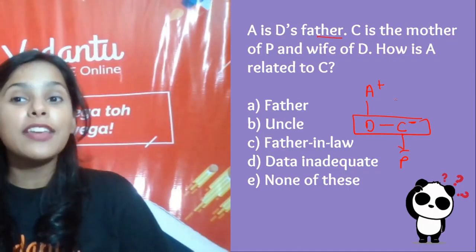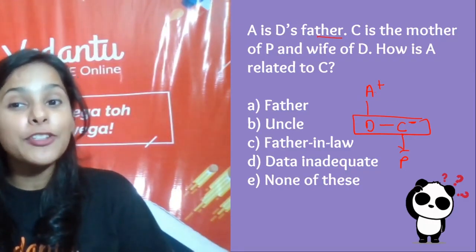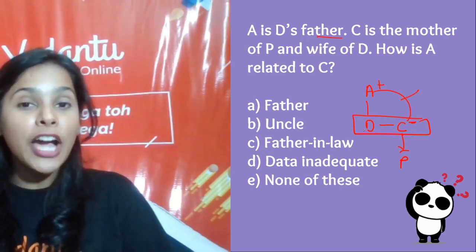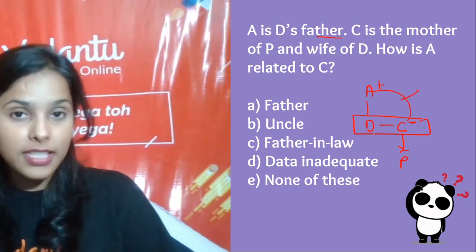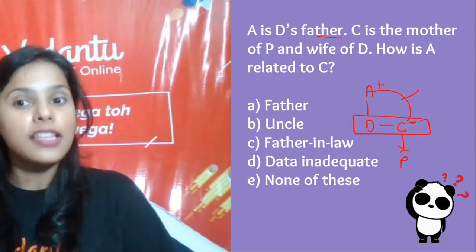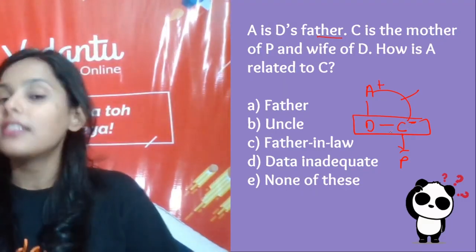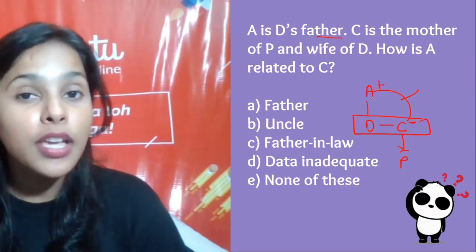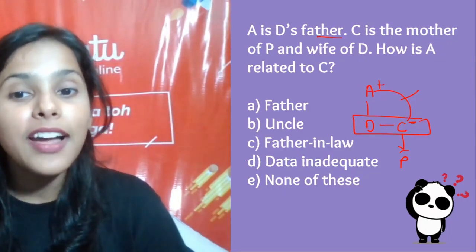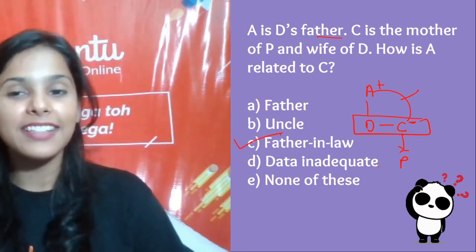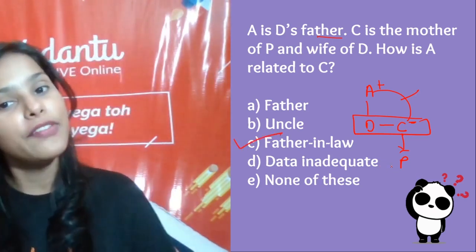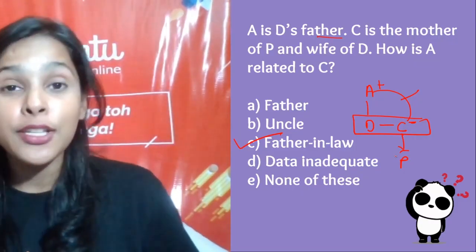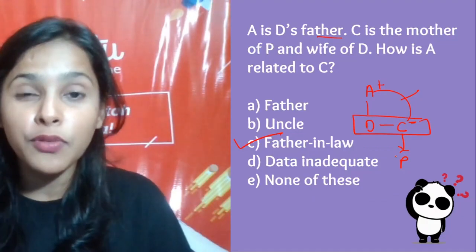What is the relationship between A and C? C is the wife of A's son, so C would be A's daughter-in-law. That makes A her father-in-law. Simple! I hope you understood how to solve these types of questions.